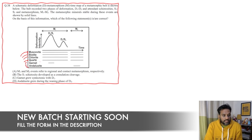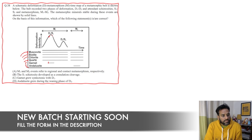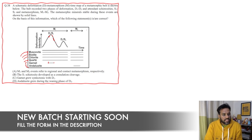If you look at garnet, it started to appear during the D1 deformation phase. As D1 was progressing, the intensity of deformation was increasing, and at that time garnet starts to develop. As D1 starts to wane — meaning become less and less effective — garnet is not present anymore after that point. Then in the M2 phase of metamorphism, there is development of andalusite.